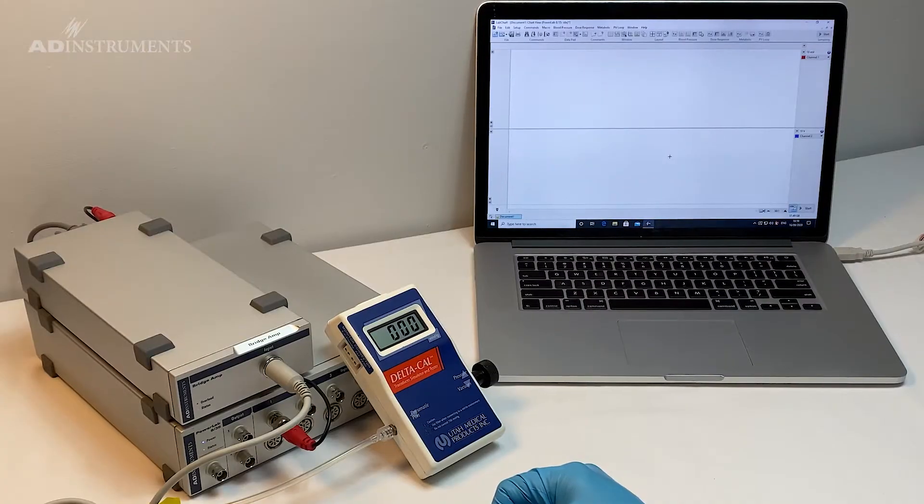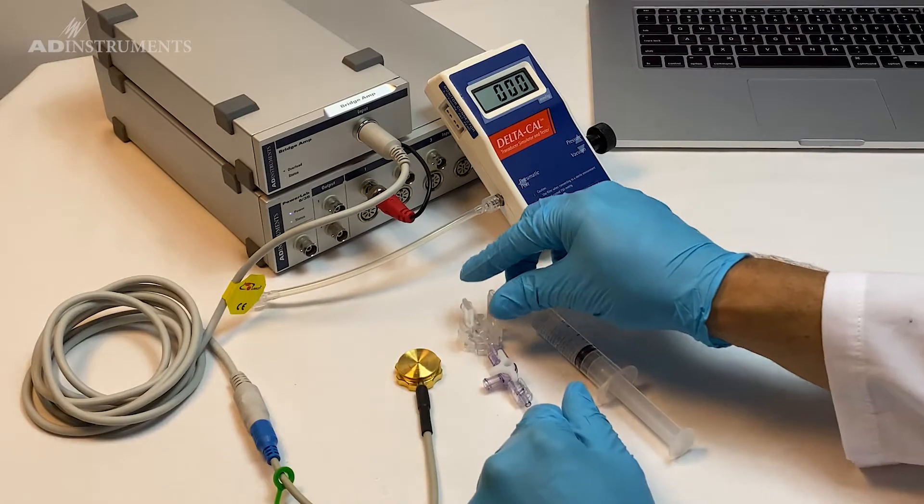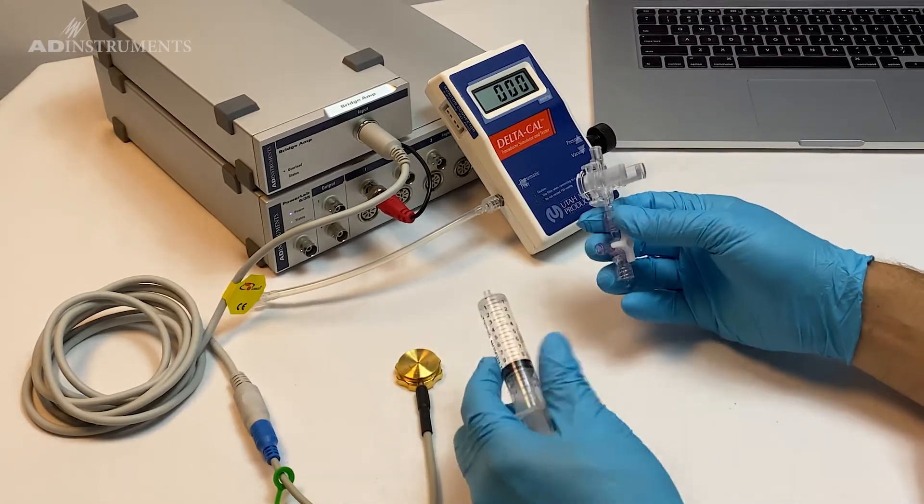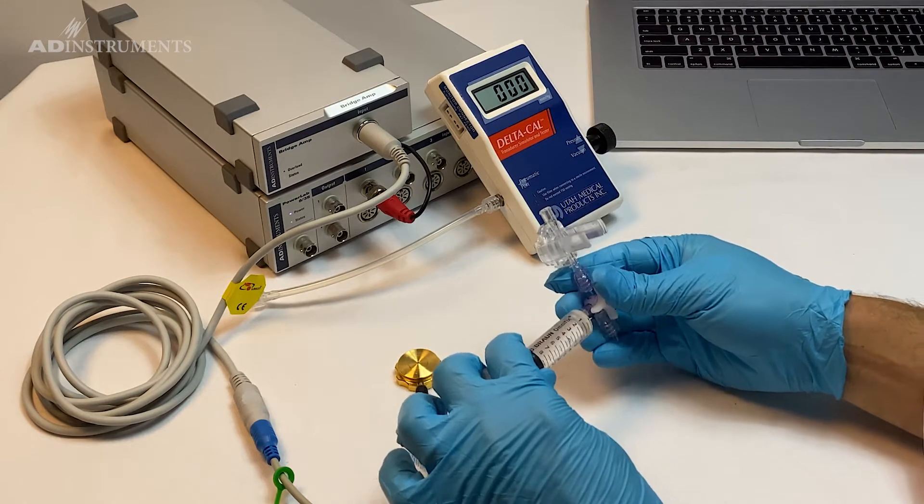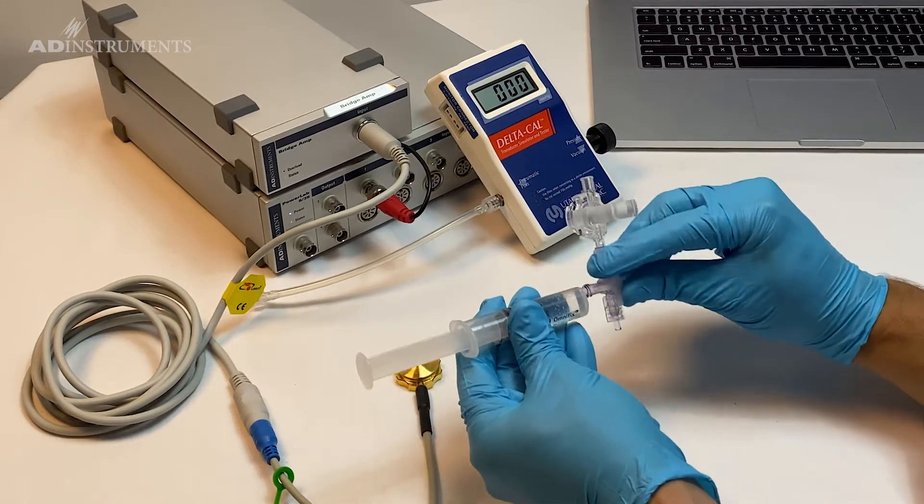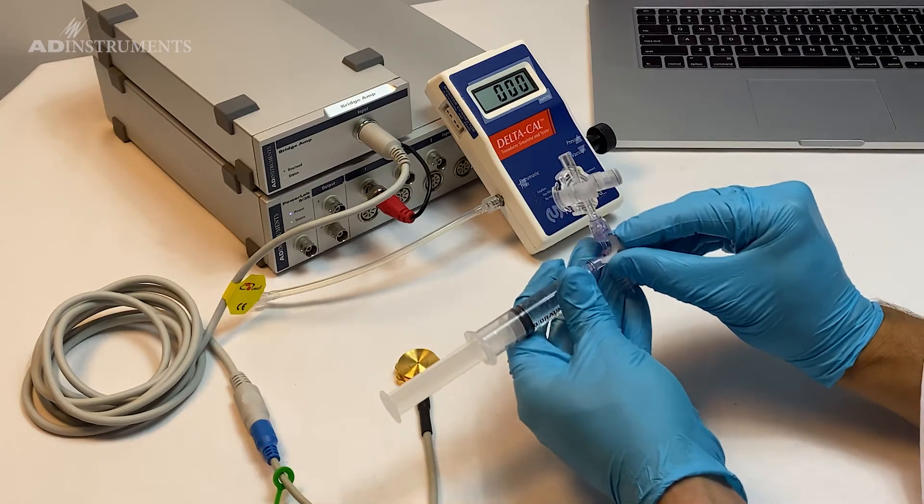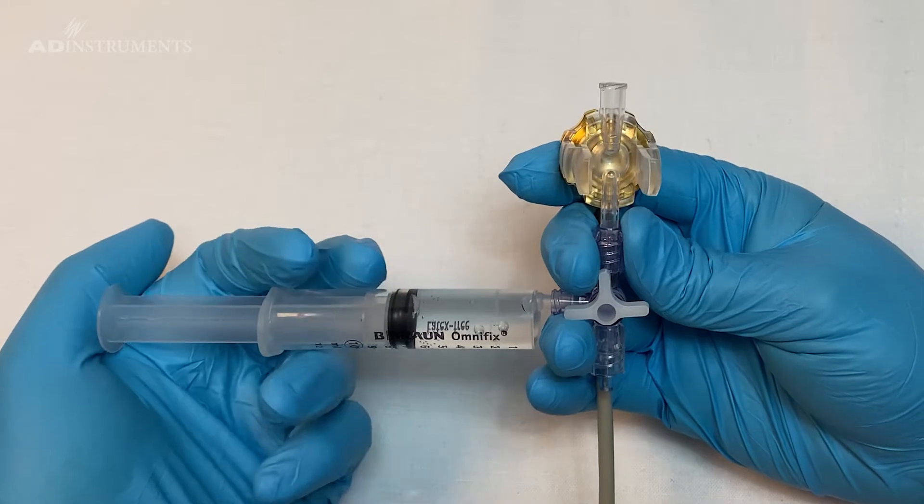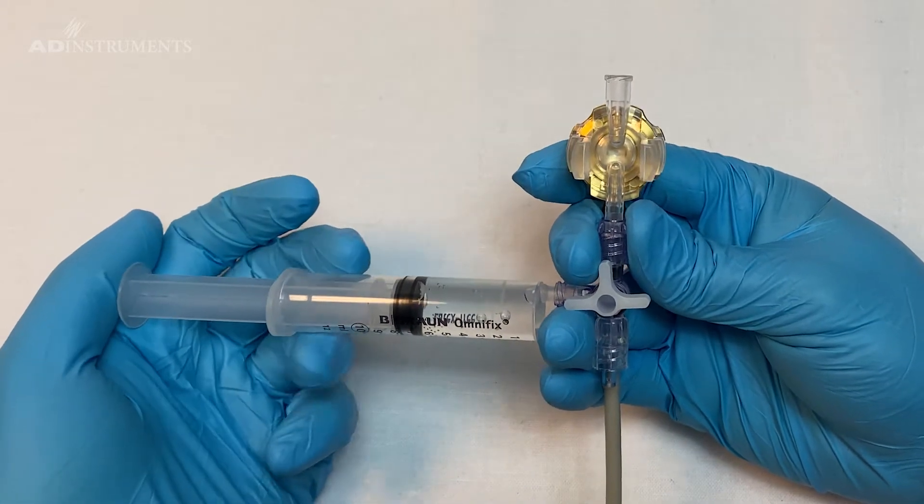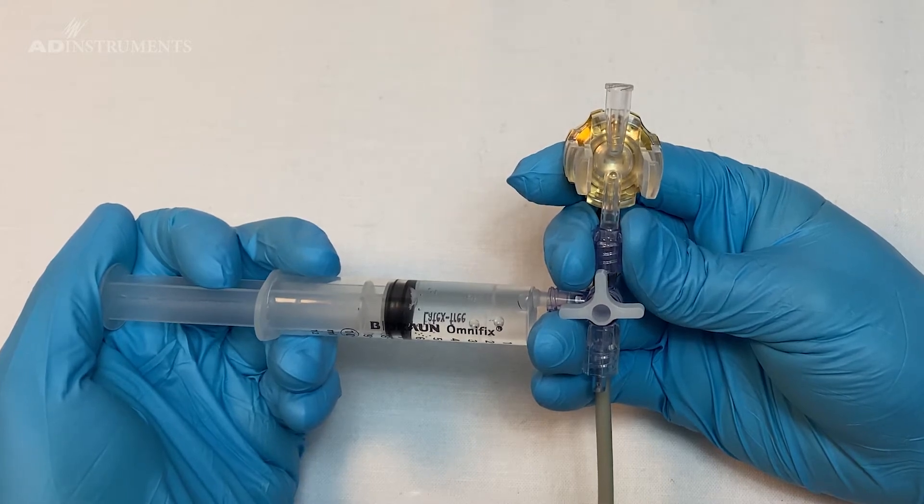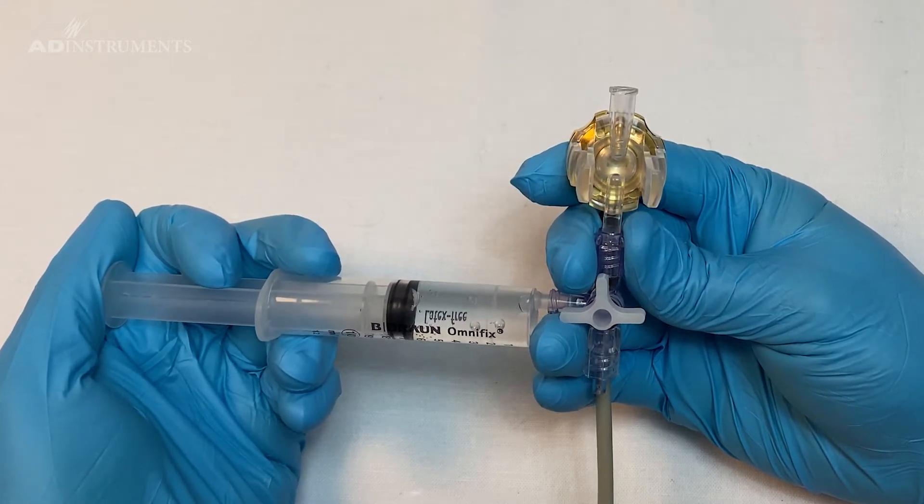The first thing I'm going to do is fill up this dome with some warm saline. I connect a syringe with some warm saline, open up the tap to the dome, and then slowly introduce some fluid into the dome until it's full.